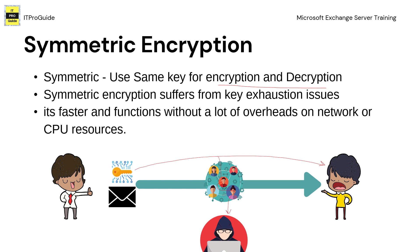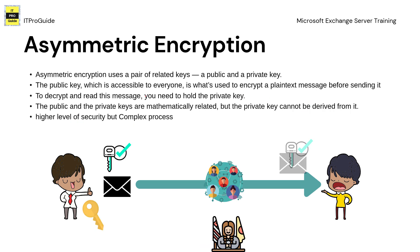If you are sharing the symmetric key over the internet, it may also get exposed to wrong hands and may leak private information. The good thing with symmetric encryption is it is very fast and doesn't need much overhead on the network or CPU resources. However, because you have to share the same key with the recipient over the internet, symmetric encryption is less secure compared to asymmetric encryption.